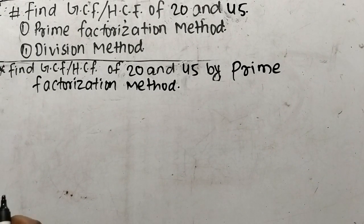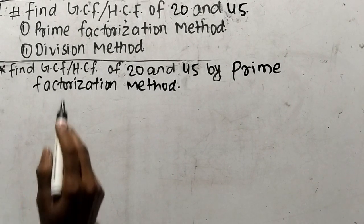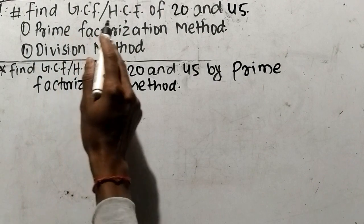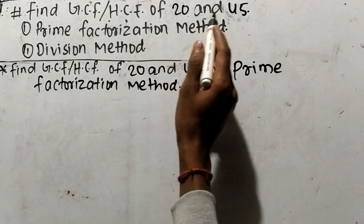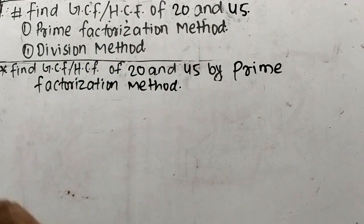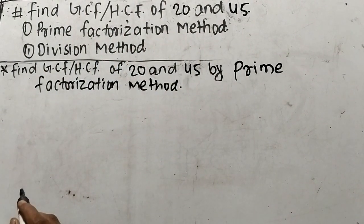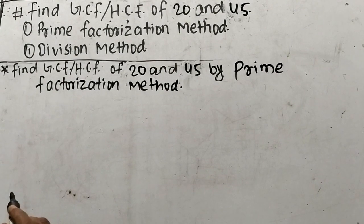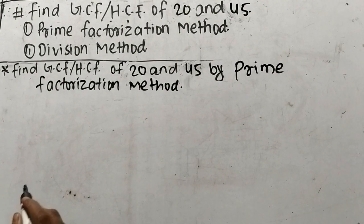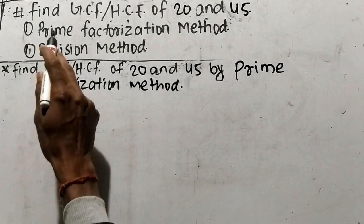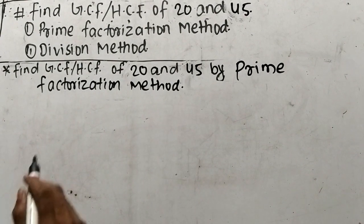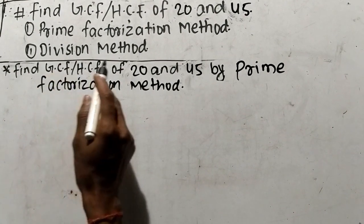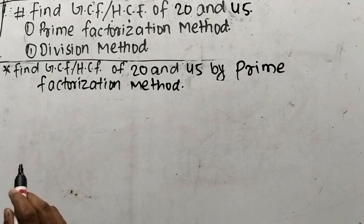Today in this video, we shall learn to find GCF or HCF of 20 and 45. We shall find out GCF or HCF by two methods: first by prime factorization method, and second by division method.